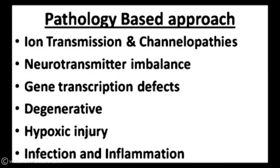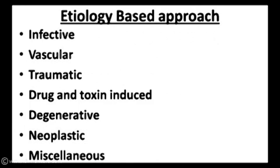The pathology-based approach focuses on the pathology behind the disease. For example, ion transmission and channelopathies include epilepsy syndromes, migraine, and periodic paralysis. Neurotransmitter imbalance syndromes related to acetylcholine or GABA imbalance manifest as Alzheimer's, Parkinsonism, and myasthenia gravis. Other categories include gene transcription defects, degenerative, hypoxic injury, infection, and inflammation.